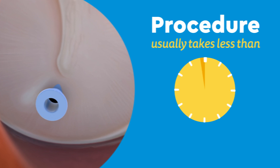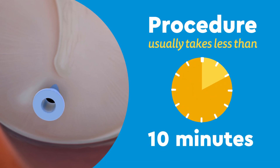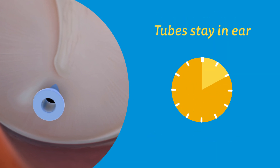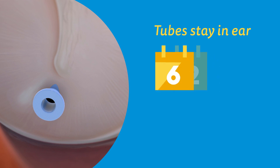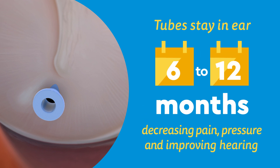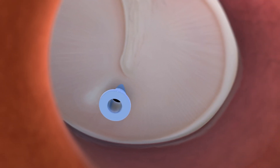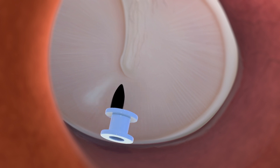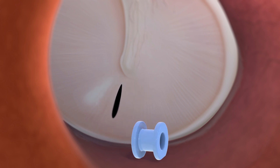The whole procedure usually takes less than 10 minutes. The ear tubes will stay in your child's ear for 6 to 12 months, decreasing pain, pressure, and improving hearing. Eventually, the tubes get pushed out. They may be covered in earwax, so you may not even notice them.